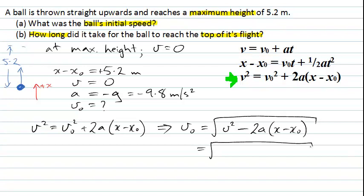So that's the square root of 0 squared minus 2. Now remember, our acceleration here is minus 9.8. And then we're going to multiply that by 5.2. And when I do that calculation, I find the answer here is 10 meters per second because I've done all of my quantities there in SI units.